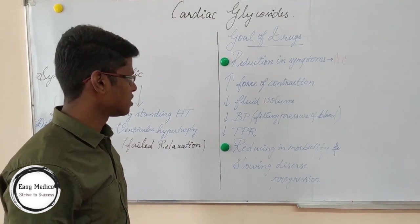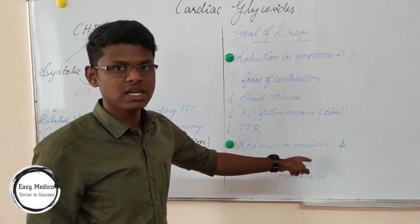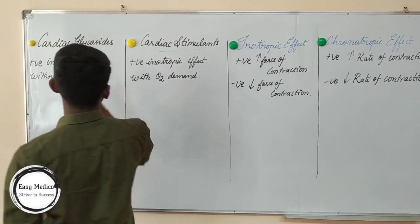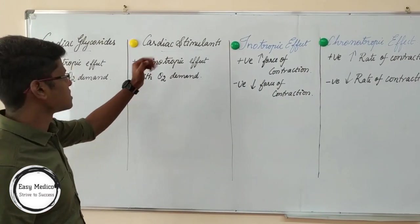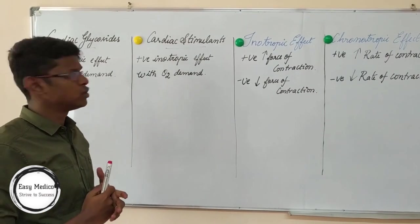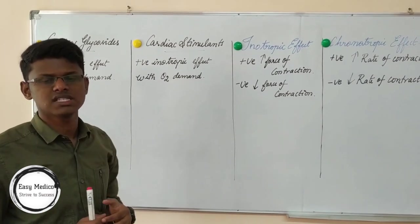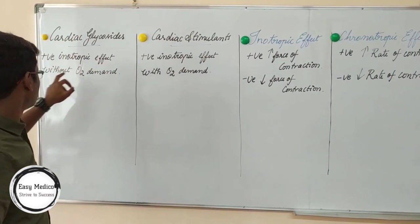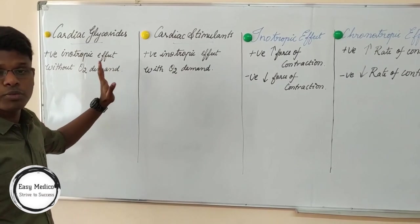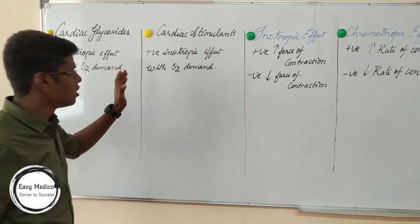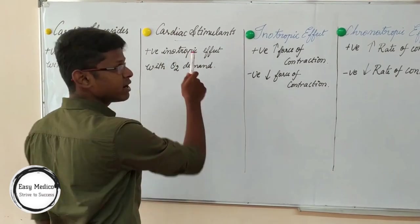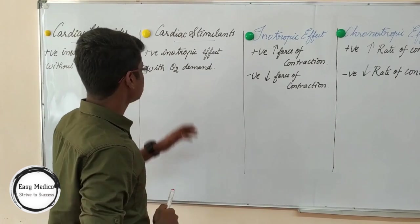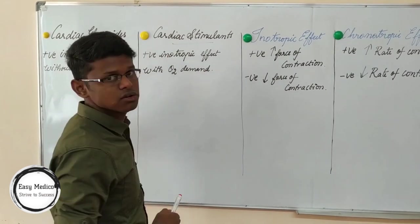The second major goal of these drugs is reducing morbidity and slowing down disease progression. Now, regarding cardiac stimulants — there is one main reason why we don't use them in congestive heart failure. Cardiac glycosides have a positive inotropic effect without proportionately increasing oxygen demand, whereas cardiac stimulants, though they also have a positive inotropic effect, do increase oxygen demand proportionately. That is why we don't use cardiac stimulants in congestive heart failure.